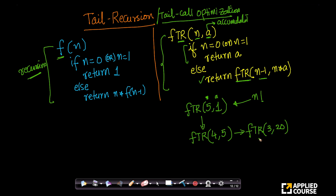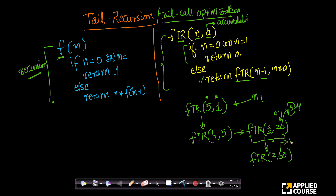By the time we came to ftr(3, ...), this accumulator a already has the value of 5 times 4. It is called an accumulator because it is accumulating the product from n down to the current value. This will again call ftr(2, 60), since 3 times 20 is 60. At that point a holds 5 times 4 times 3. This will call ftr(1, 120), and since n equals 1, it returns 120 — problem solved.